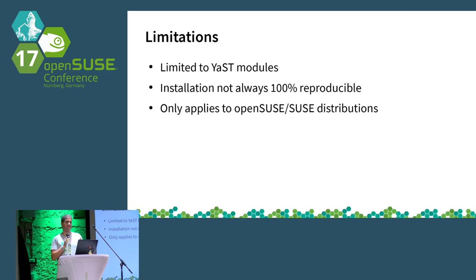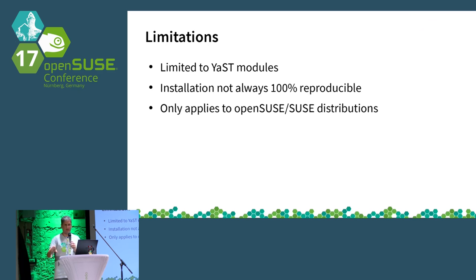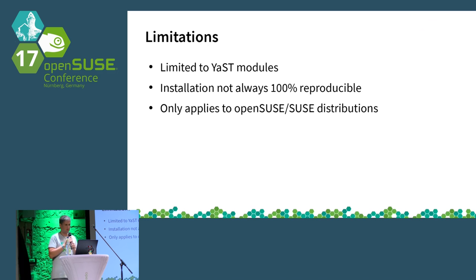Another problem is that when you clone a system, installation is not always 100% reproducible. If you configure something outside AutoYaST, of course that won't be in the profile. But even if you use a script in your profile, when you clone the system, that script won't be included — so you need to do it manually. And AutoYaST only applies to openSUSE and SUSE distributions, which is somehow a limitation.